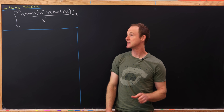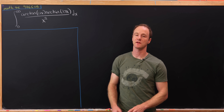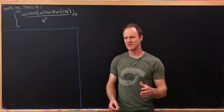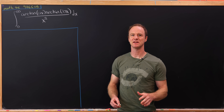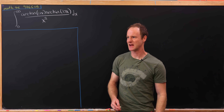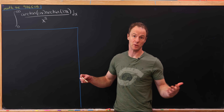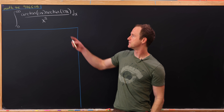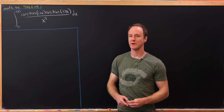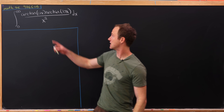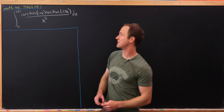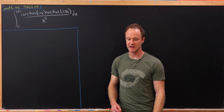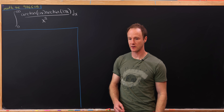Today we're going to look at a nice integral that I found on the math stack exchange that has an unreasonably aesthetic value when we get down to it. We will evaluate the integral from 0 to infinity of the arctan of ax times the arctan of bx over x squared.